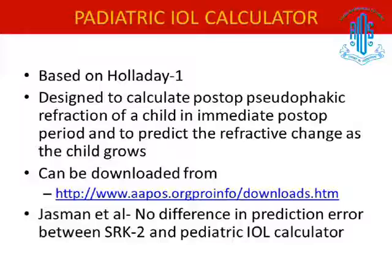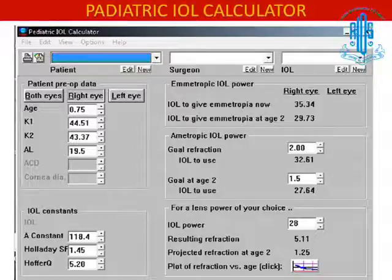A pediatric IOL calculator was developed based on the Holladay 1 formula, designed to calculate postoperative pseudophakic refraction of a child in the immediate postoperative period and to predict refractive changes as the child grows. A study by Jasmin et al. found no difference between the SRK2 formula and the pediatric IOL calculator in prediction error. By inputting the A-constant and other preoperative data along with the desired refraction at two years, you can obtain the IOL power to implant.